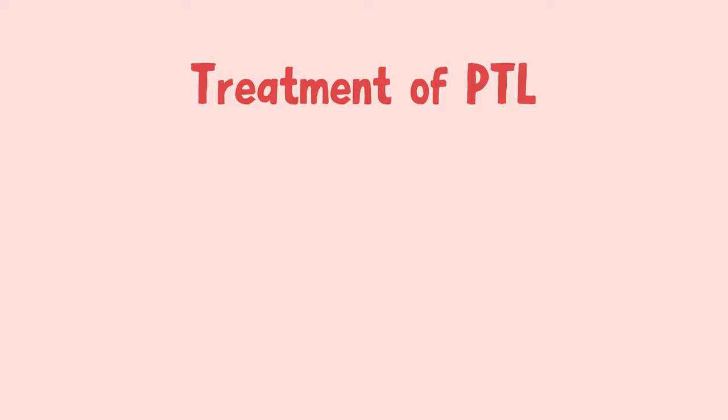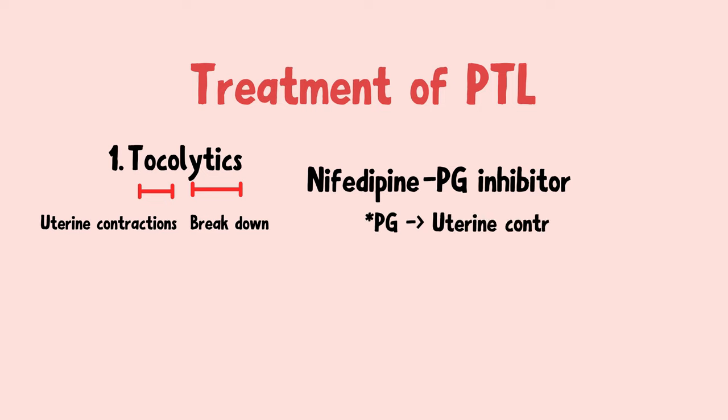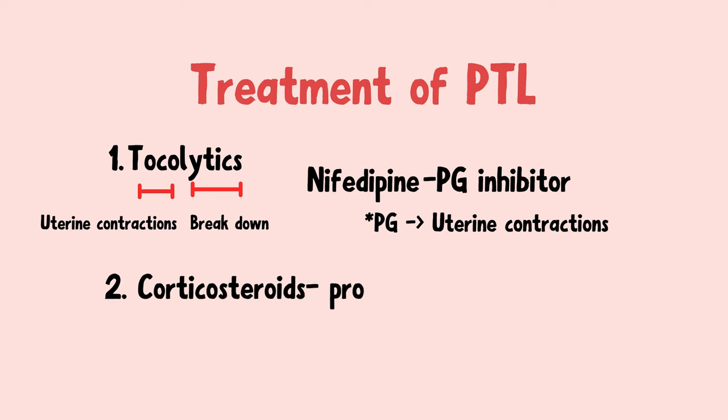So how do you treat these patients? You can give tocolytics — 'toco' meaning contractions, 'lytics' meaning to break down — to stop the uterine contractions. The first-line drug is nifedipine, a prostaglandin inhibitor. Since prostaglandins cause uterine contractions in the first place, inhibiting them stops the uterus from contracting. Tocolytics can usually prolong labor by up to seven days, during which you can give the patient corticosteroids to promote fetal lung maturity.